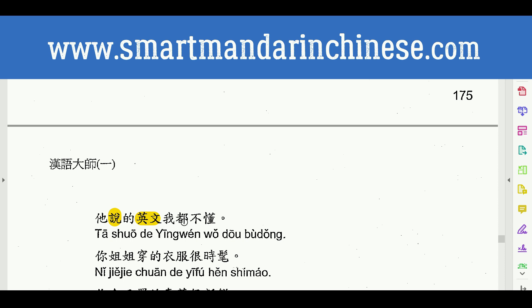So 我都不懂 — I don't understand. I don't understand what? The English. What English? The English that she says. So 她说的英文，我都不懂.